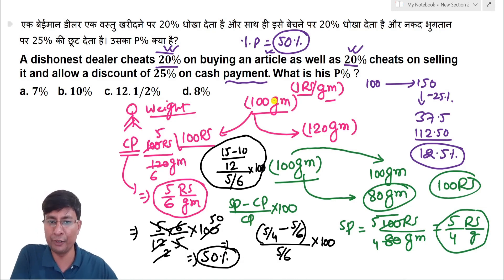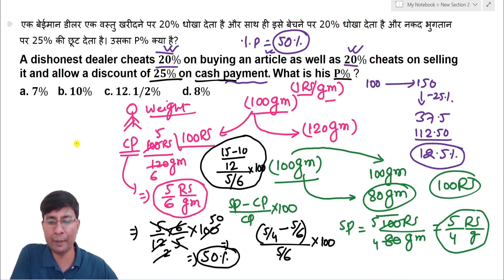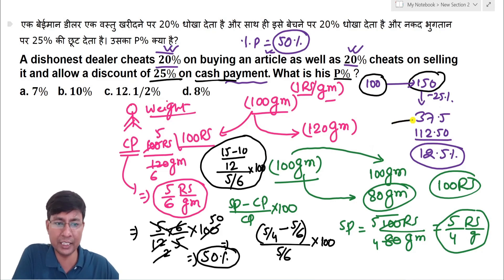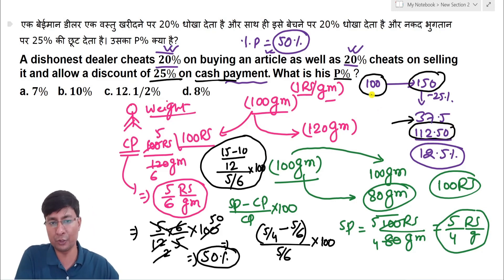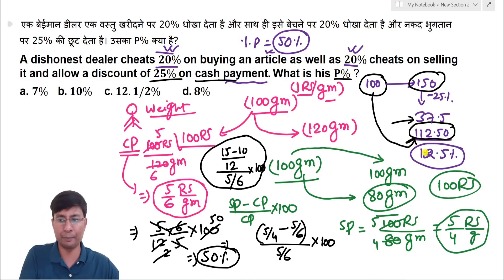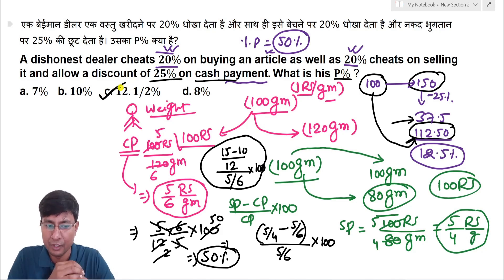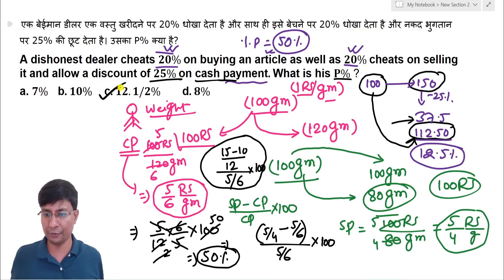The profit is 50%, meaning on 100 rupees the dealer gets 150. If the customer makes a cash payment, a 25% discount is applied — that is 37.50 rupees discount on 150 — leaving a price of 112.50. So the net profit is 12.5%, which means the answer is option C. Thanks for watching; please subscribe and share the channel.